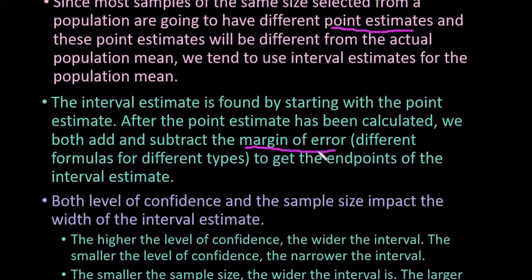Sometimes we could have dealt with an unusual sample and missed the mean entirely. We use the margin of error to get the endpoints of the interval estimate. I'm not doing any calculations in this video because we use different formulas for different types of confidence intervals or interval estimates.